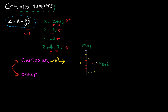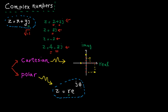Here is the point. Now let's look at the polar format. In polar representation, each number is uniquely identified by a radius r and an angle theta. Radius is the distance from the origin and here is the angle.